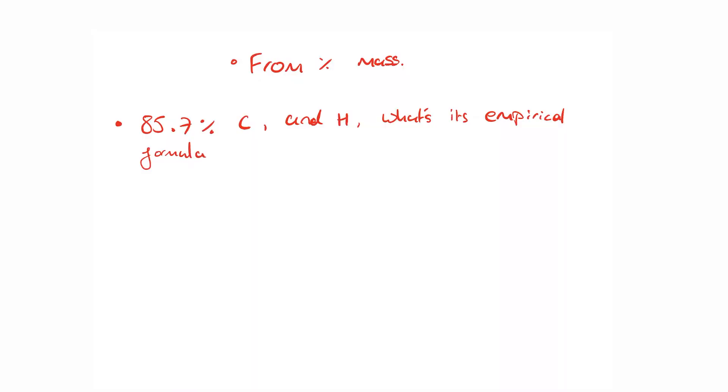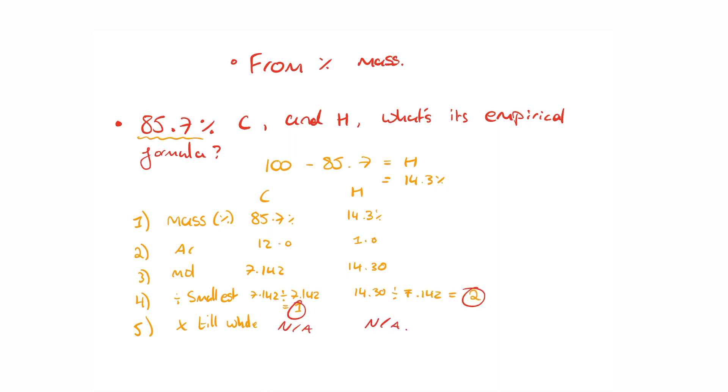You can also be asked to find the empirical formula given percentage masses. In this question, you've been asked to determine the empirical formula of a compound containing 85.7% carbon and hydrogen. You might be sitting there going, I don't know how much hydrogen there is. But if you think about it, all percentages need to add up to 100, so it must be 14.3%. The only difference is we replace the line that says mass with a percentage value. Carbon gets 85.7%, hydrogen gets 14.3%. We just treat that as if it was a mass in grams. We divide the percentage by the atomic masses. So 85.7 divided by 12 and 14.3 divided by one. We can see here there is 7.142 moles of carbon, 14.3 moles of hydrogen. Then we divide by the smallest value, in this case 7.142, to get a ratio of one carbon atom for every two hydrogen atoms. The empirical formula is CH2.